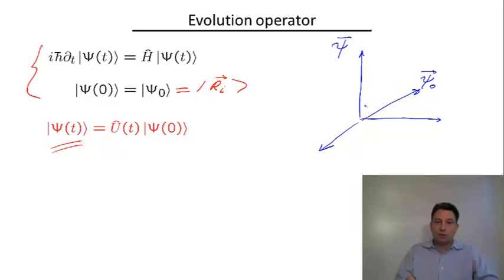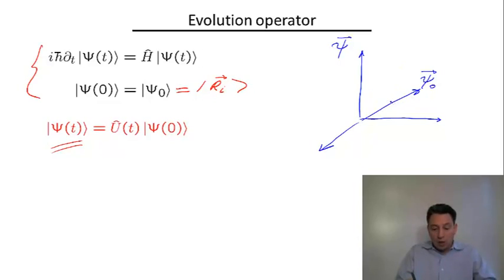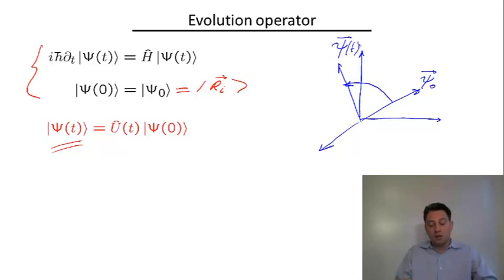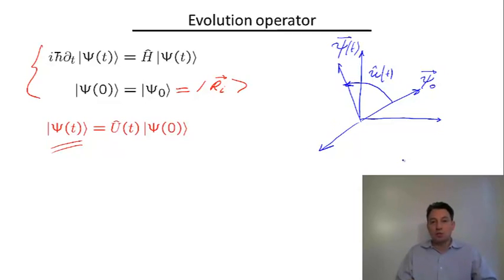The norm of this vector — the absolute value squared — corresponds to the total probability of finding our quantum particle in a certain state, and from the Born interpretation we can say this probability equals one. The norm of this vector should be preserved as we perform a quantum evolution. So the only thing we can imagine this vector doing as a function of time under the Schrodinger equation is rotating by some angle to a new state psi of t, and the operator which enforces this rotation is exactly the evolution operator.